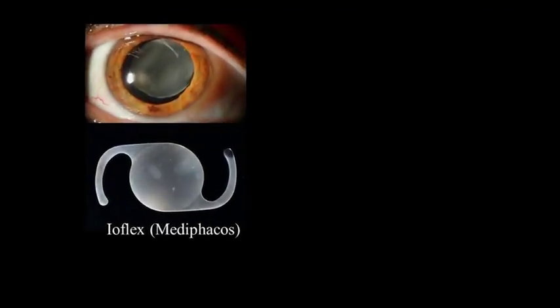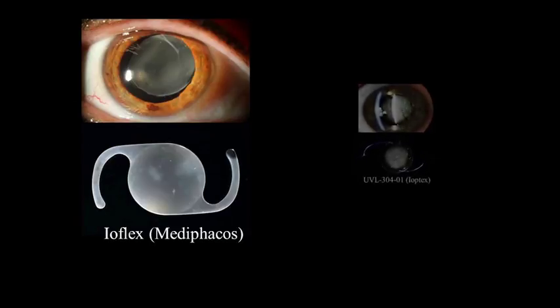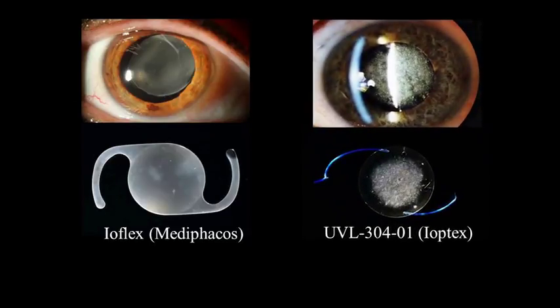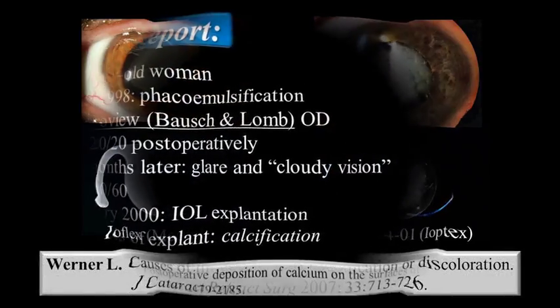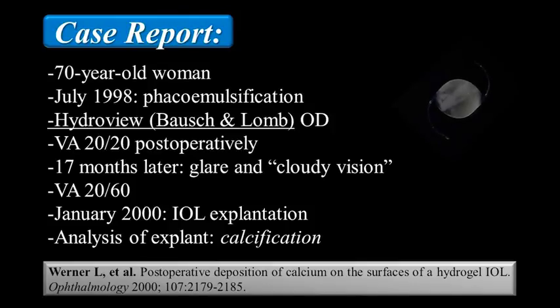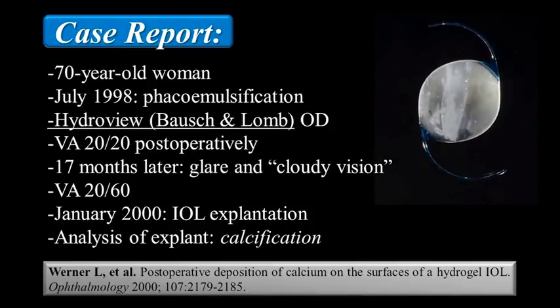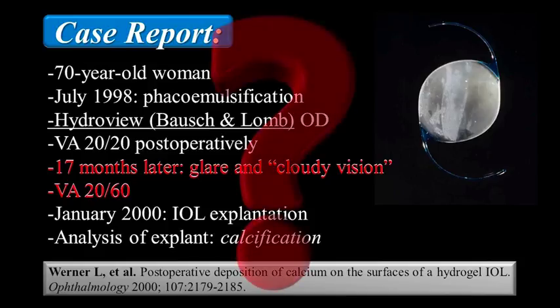Calcification of hydrophilic acrylic intraocular lenses as well as snowflake degeneration of PMMA lenses are important causes of IOL opacification requiring explantation. As shown in this example, the symptoms experienced by the patients may be predominantly glare and cloudy vision, while visual acuity is not drastically reduced. How can we better understand the effects of IOL opacification on the visual function?